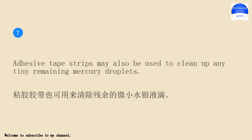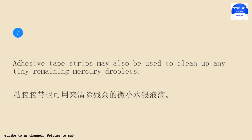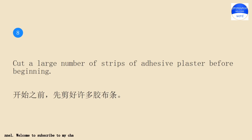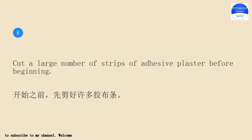Adhesive tape strips may also be used to clean up any tiny remaining mercury droplets. Cut a large number of strips of adhesive plaster before beginning.